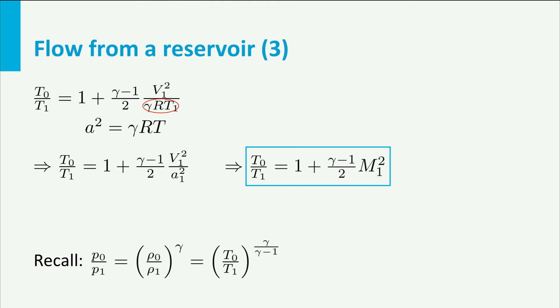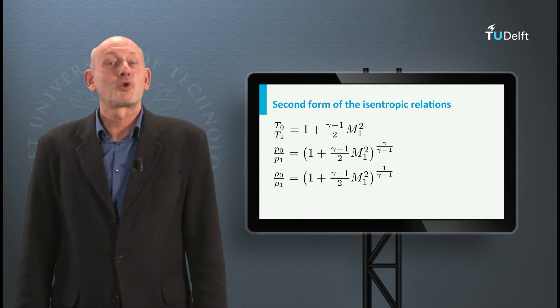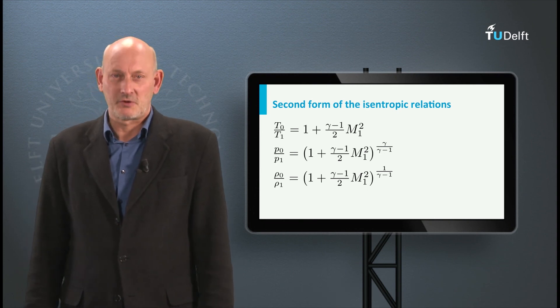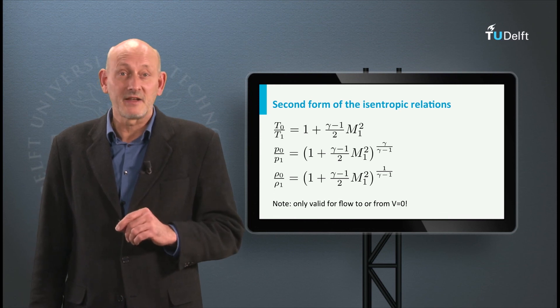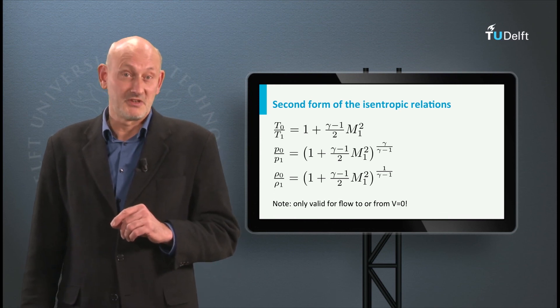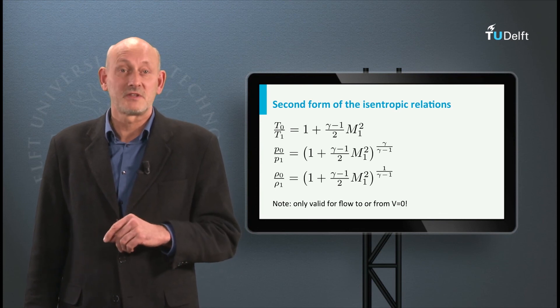If we now use the isentropic relations, we can also relate other quantities to the Mach number in the flow. This gives these relations that relate temperature, pressure and density to the Mach number. They are also called the second form of the isentropic relations. Mind you, these expressions are only valid when the velocity is 0 in station 0, since that was the assumption at the start of the derivation.